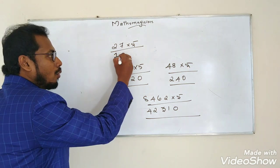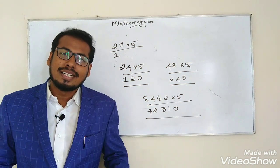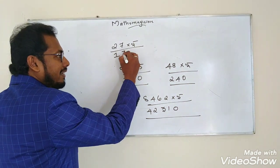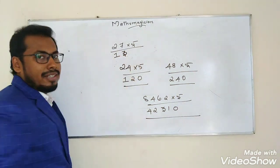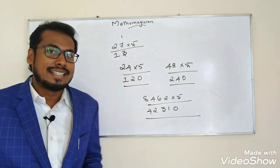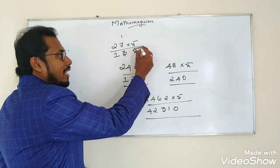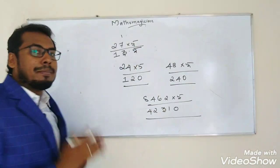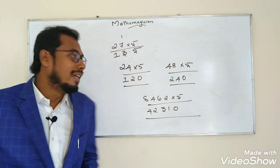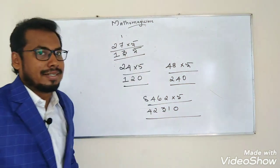For 57 into 5: since 7 is an odd number, take the previous even number, which is 6. Half of 6 is 3. The remainder from the odd digit gives us point 5. So the answer is 285. For an odd number, take the previous number, halve it, and add point 5 as the remainder. That is your answer.